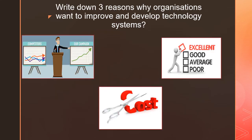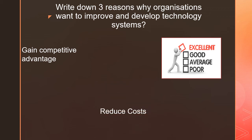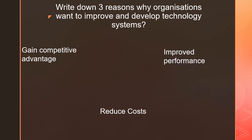For this task, you want to write down reasons why organizations want to improve and develop technology systems. Pause the video again — you have a lot of pausing to do because you're revising, writing, reading, and listening. The reasons are: one, it gains competitive advantage over their competitors; two, it reduces costs; and three, it improves performance.